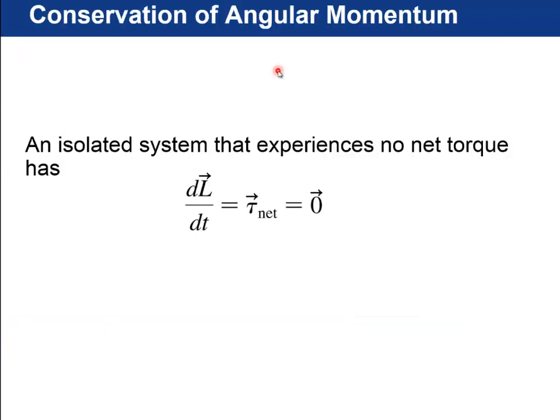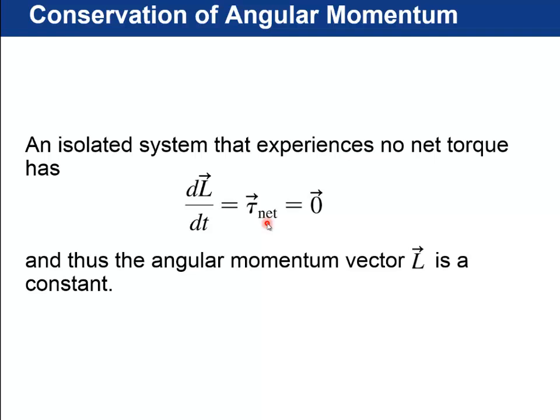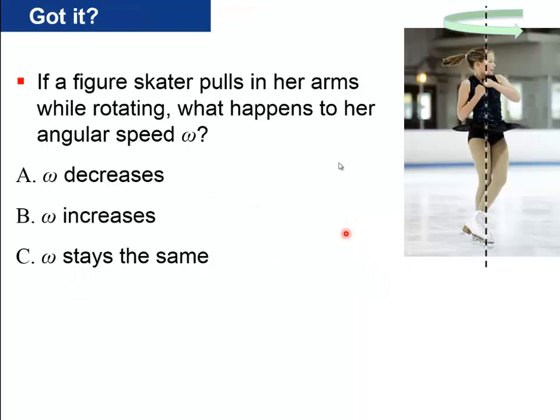Next section, 11.4, is conservation of angular momentum. So we have that dl by dt is the net torque. If there is no net torques on an object or any system, then the angular momentum vector is constant. So dl by dt is going to be zero. So let's see if you've got that. A figure skater pulls in her arms while rotating. What happens to her angular speed omega? Does it decrease, increase, or stay the same? Press pause. Think about that. I'll tell you my answer.